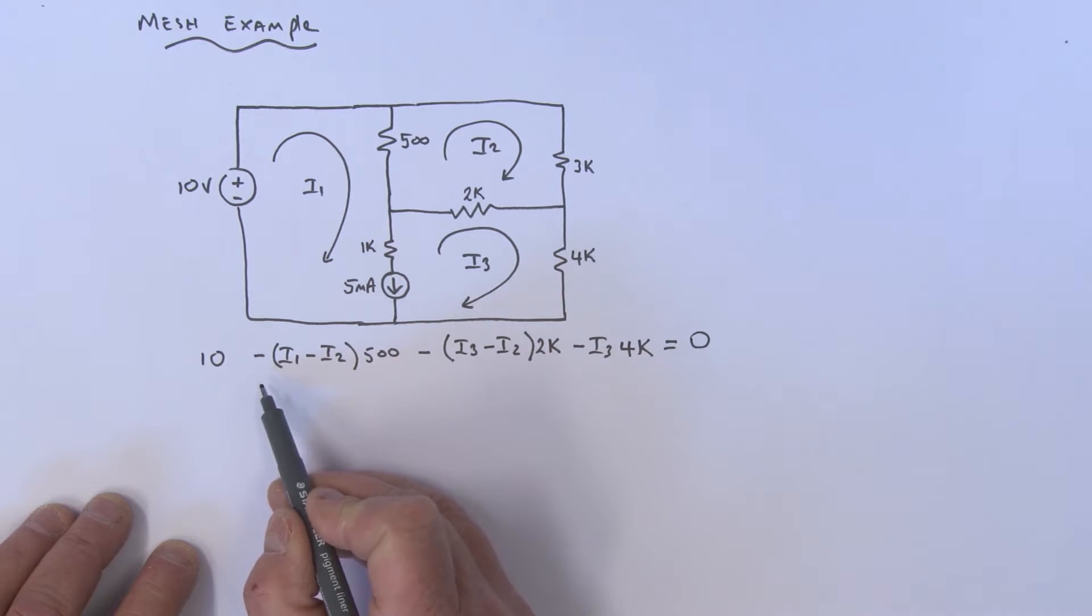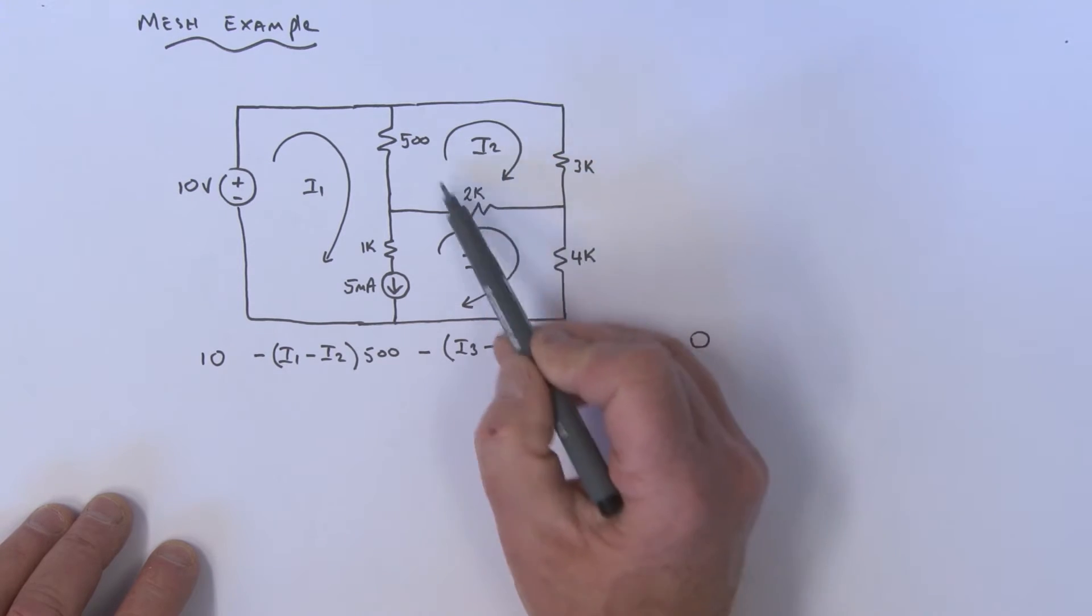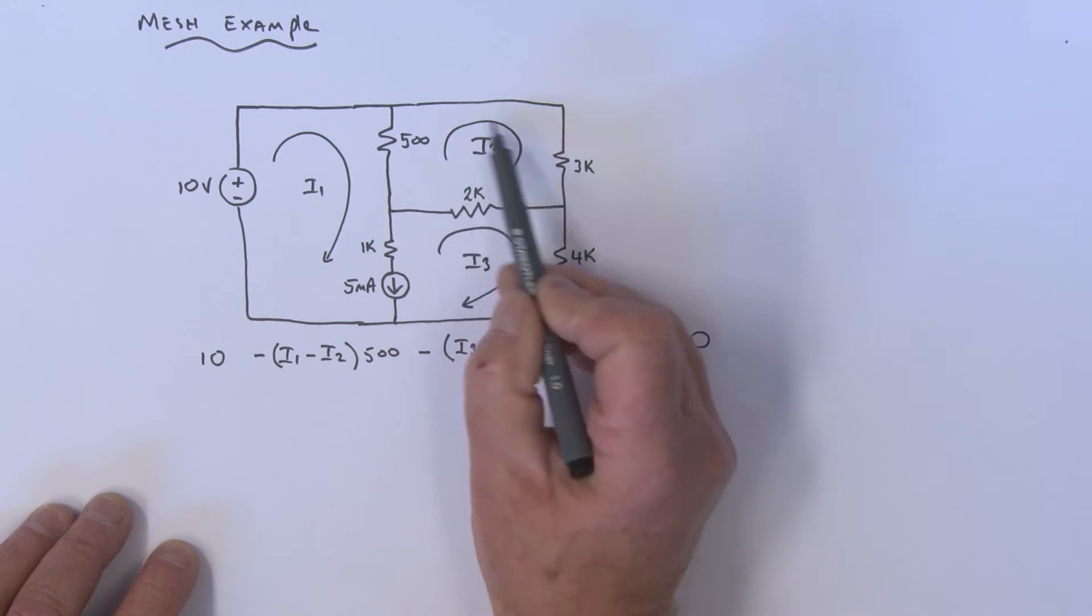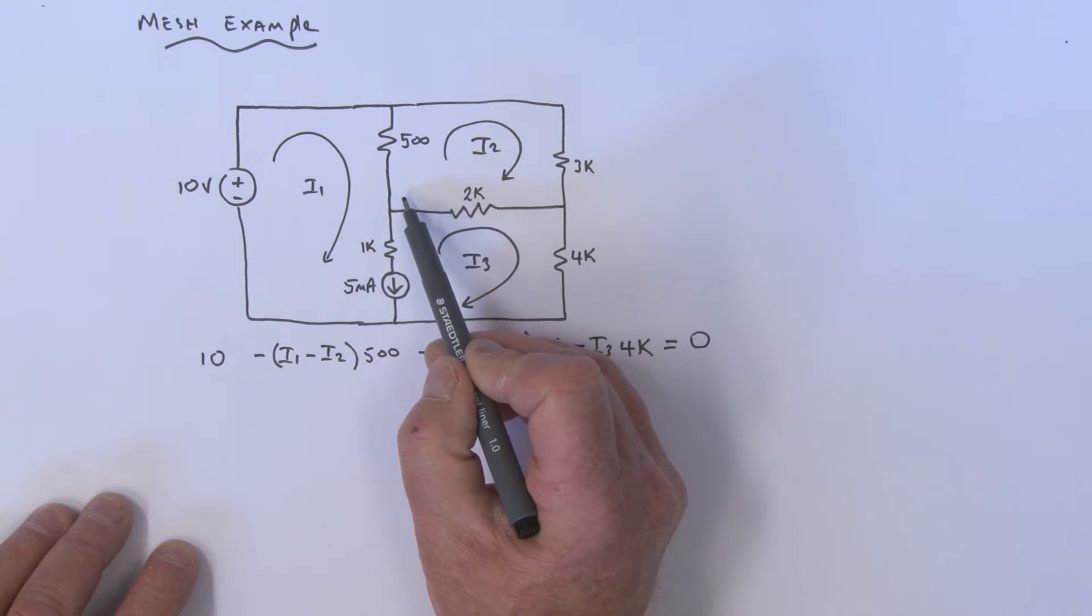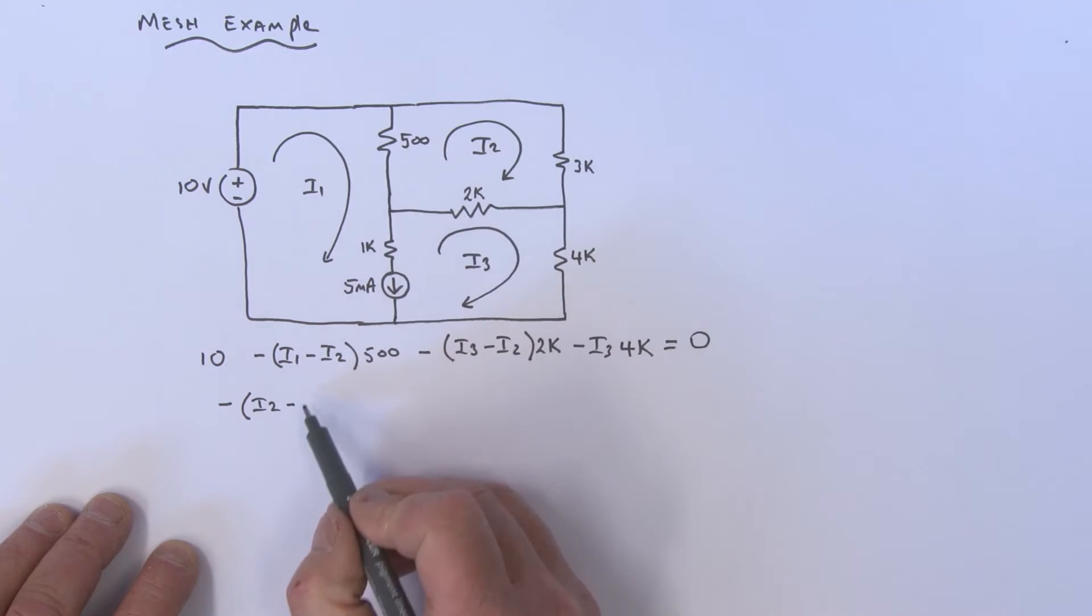Let's look at the I2 mesh current equation. Starting at this point, I2 is leading, so we've got minus (I2 - I1) times 500 ohms. Coming around, that's minus I2 times 3k.